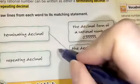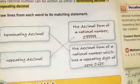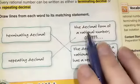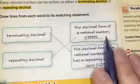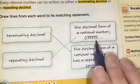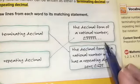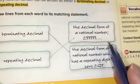A repeating decimal is the decimal form of a rational number that repeats, such as one third, which would be 0.3 repeating.